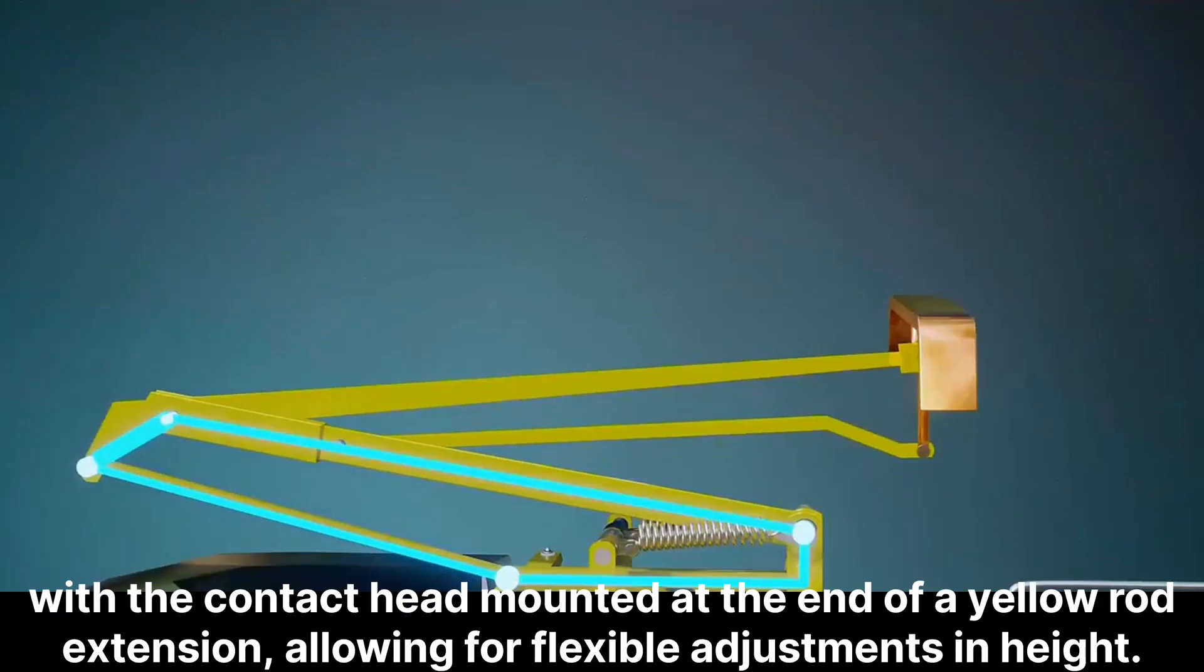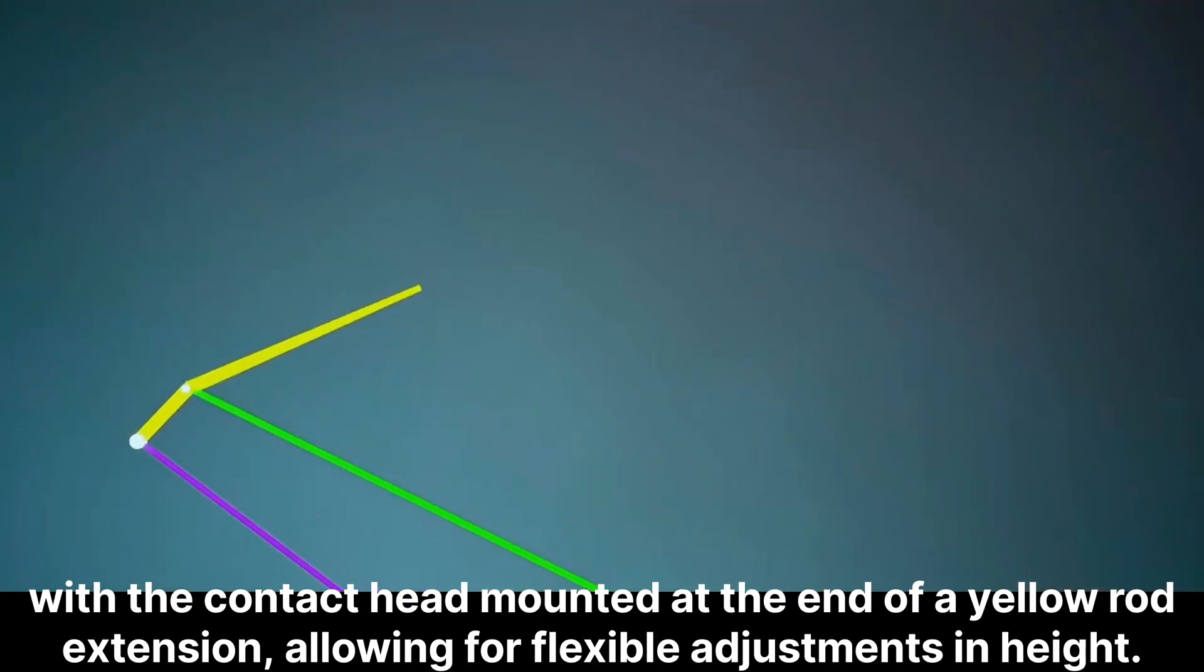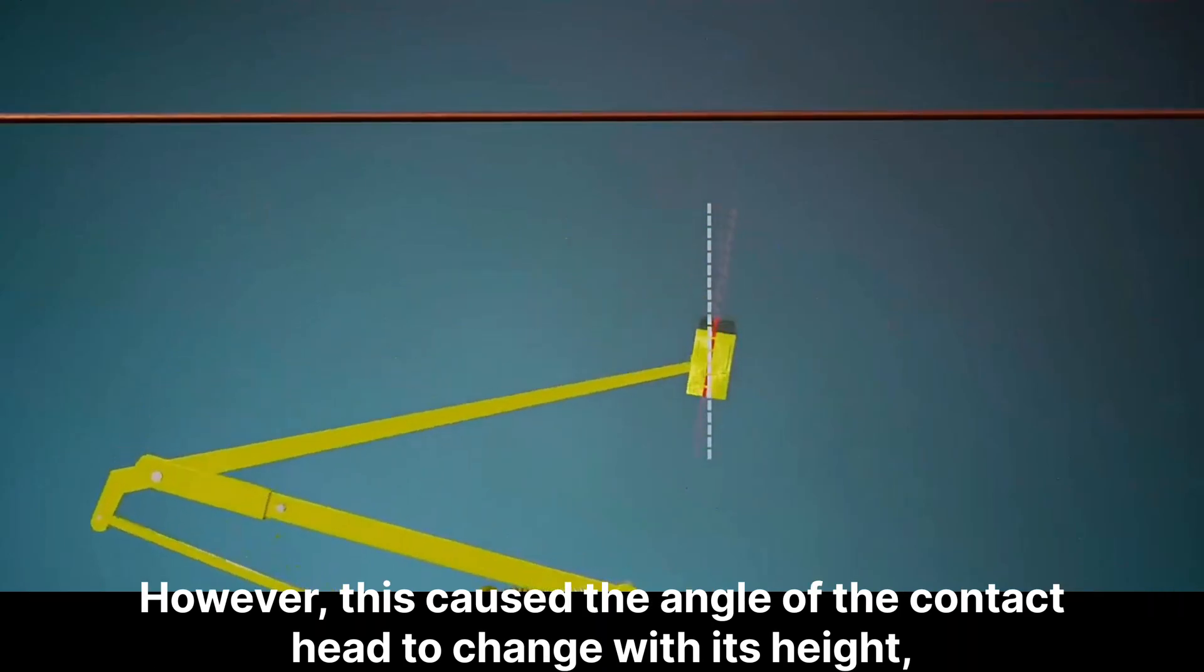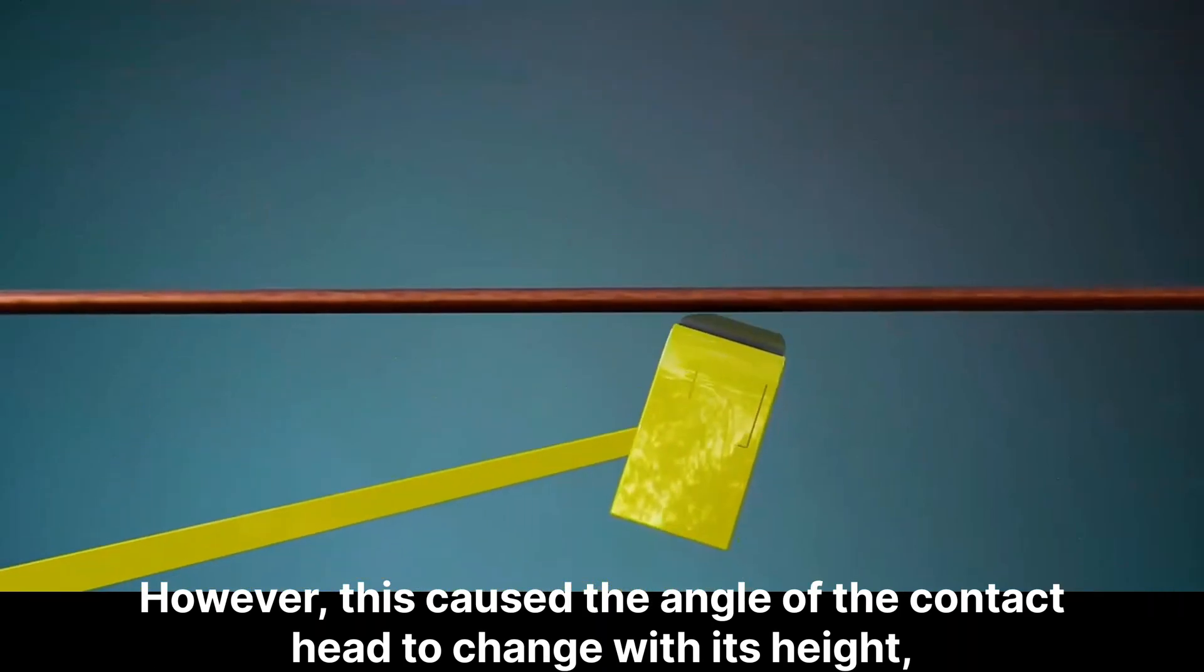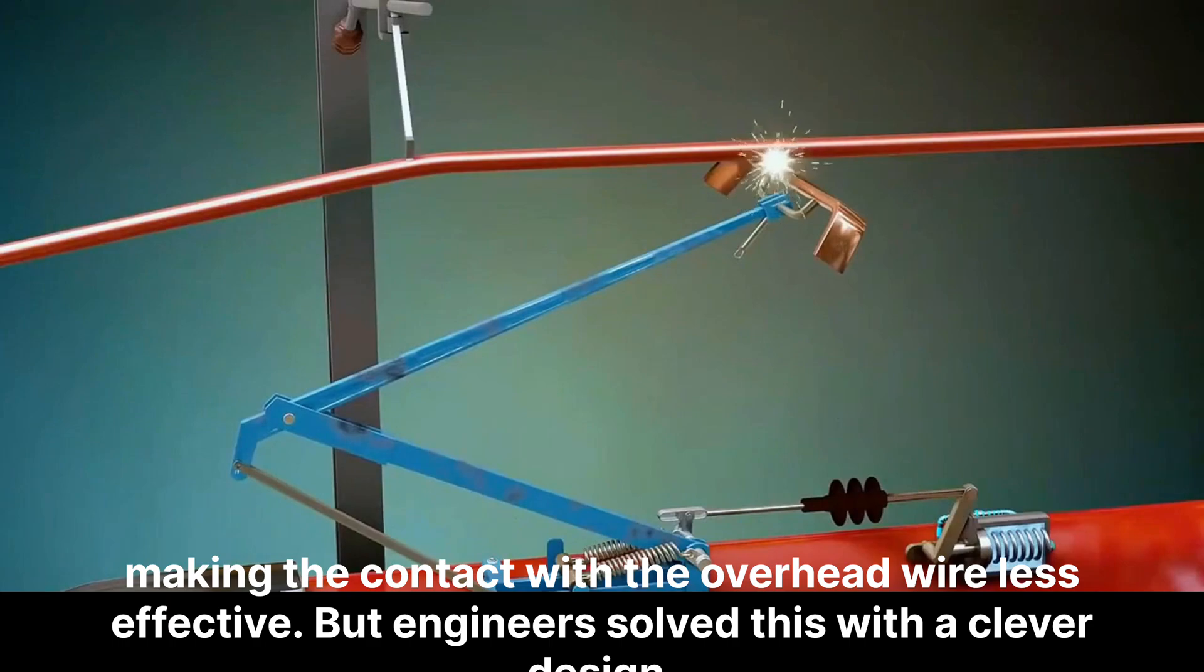Its base is a four bar mechanism, with the contact head mounted at the end of a yellow rod extension, allowing for flexible adjustments in height. However, this caused the angle of the contact head to change with its height, making the contact with the overhead wire less effective.